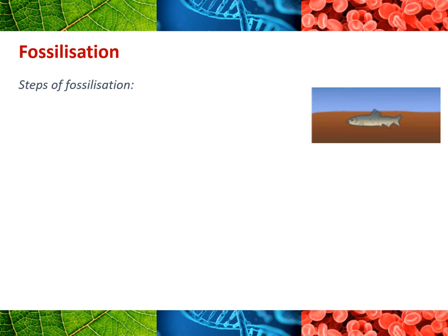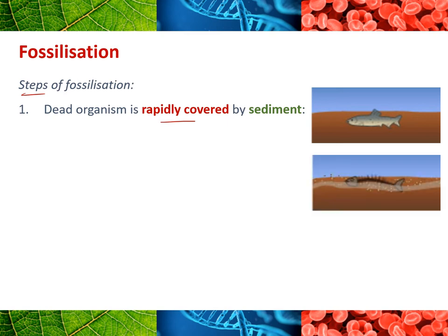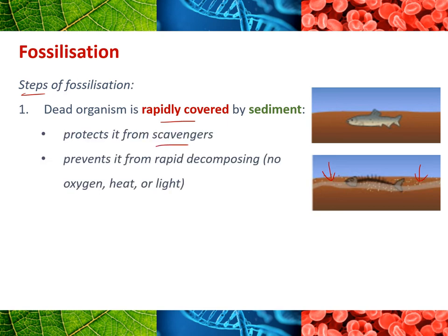Fossilisation: there are a few things you need to know, starting with the steps. For something to become fossilised it needs to die, and then that dead organism must be very rapidly covered by sediment — common on things like the ocean floor. This is important to stop scavengers from eating the dead body and to prevent it from decomposing too quickly. By being covered quickly, there's no oxygen, heat, or light — any of those things that speed up decomposition.